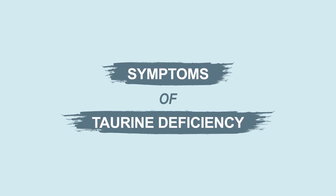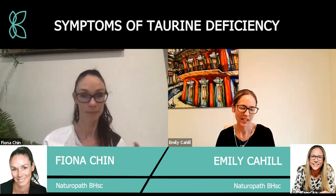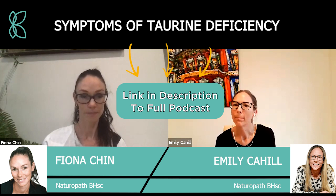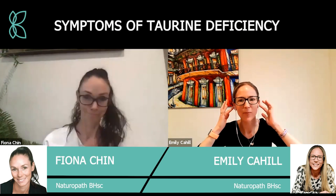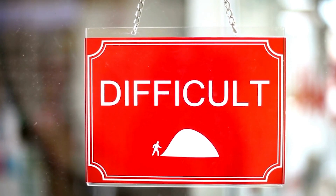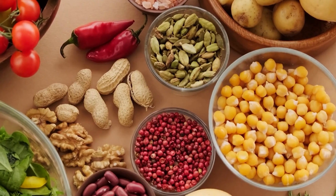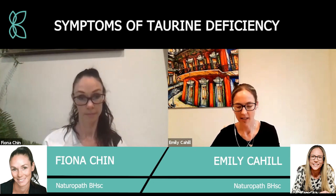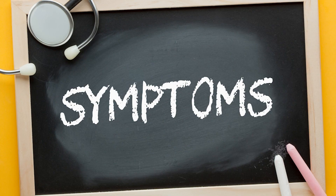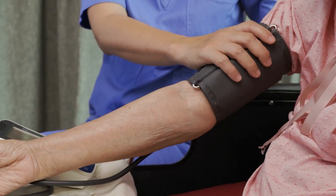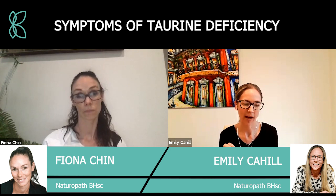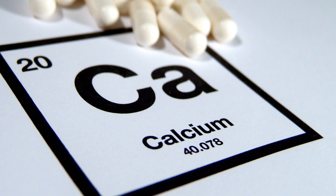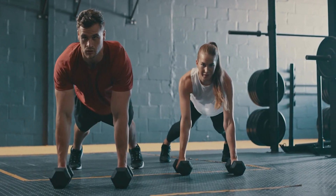How would you know you're deficient in taurine, apart from having a blood test? As a practitioner, assessing taurine deficiency wouldn't be first on my mind. It's really difficult for people to assess unless they know their diet or have related health conditions. Some symptoms can include problems with vision — since it's important for eye health — and high blood pressure. Because of its role in calcium regulation, muscle pain after exercise or muscle cramps can also occur.